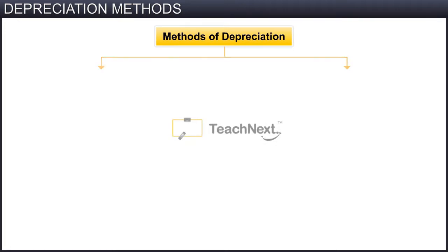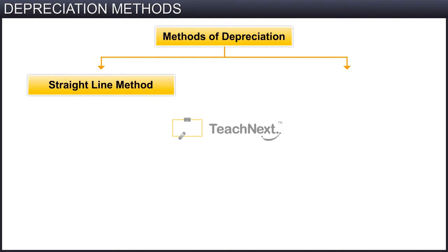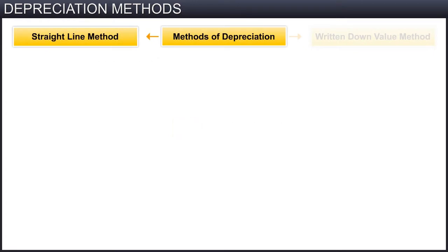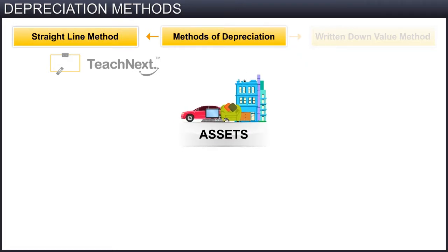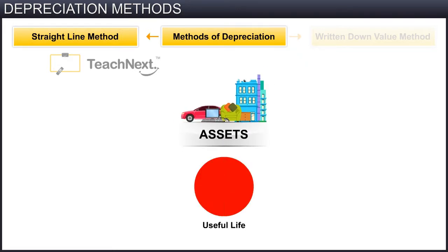In this module we will be focusing on the two most popular methods: the straight line method and the written down value method. Let us first start with the straight line method of depreciation. This method is based on the assumption that the asset is evenly used throughout its life.